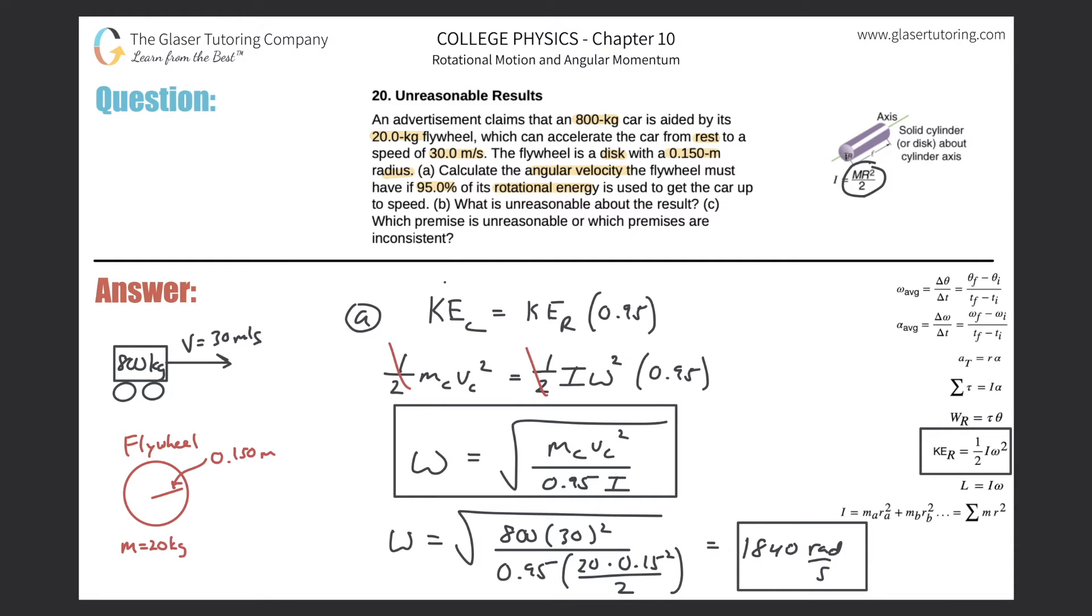Now letter B says what is unreasonable about this result. This is a tremendously large rotational velocity that it experiences. You know how many revolutions per minute is this? It's a significant amount. You could also calculate if you wanted, you could calculate centripetal acceleration of the edge of the disc here.